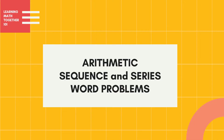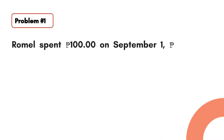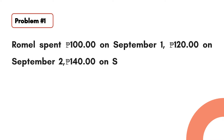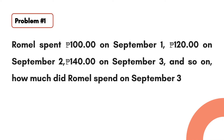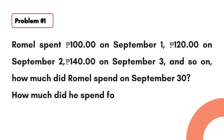To the first example: Rumel spent 100 pesos on September 1, 120 pesos on September 2, 140 pesos on September 3, and so on. How much did Rumel spend on September 30, and how much did he spend for the entire month?